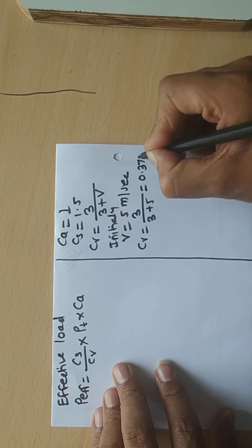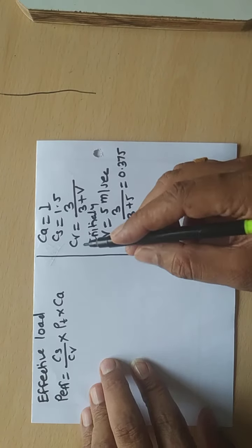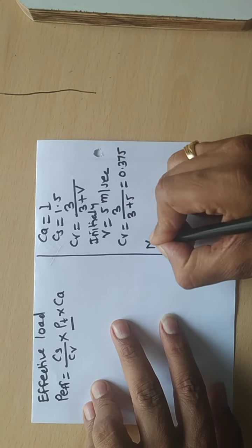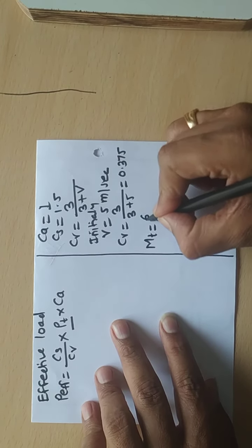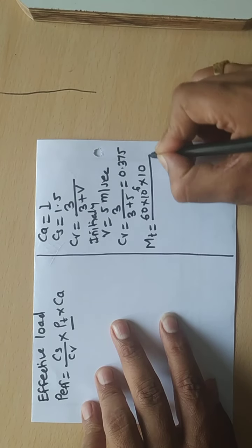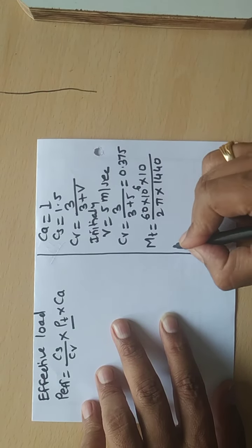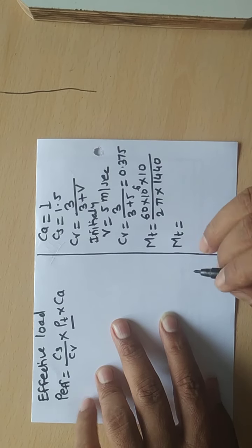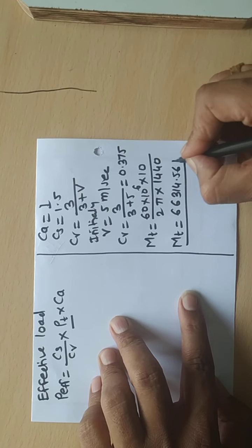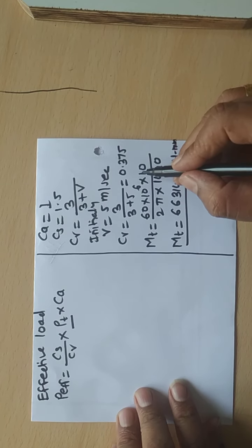CV = 3 upon (3 + 5) = 3/8 = 0.375. Now, rated power is given, so first find torque transmitted: MT = (60 × 10⁶ × kW) / (2π × NP) = (60 × 10⁶ × 10) / (2π × 1440) = 66314.56 N·mm.